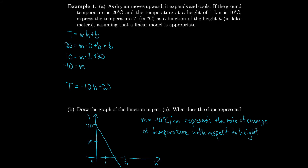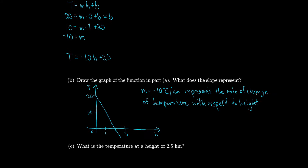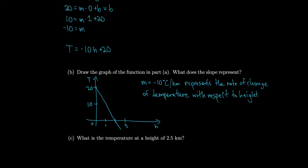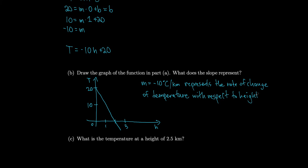Let's look at our last part. Since we have our model T equals negative 10H plus 20, we can plug in any height we want. Let's plug in 2.5. T equals negative 10 times 2.5 plus 20, and we get negative 5 degrees Celsius.